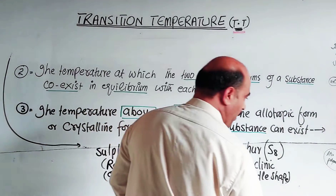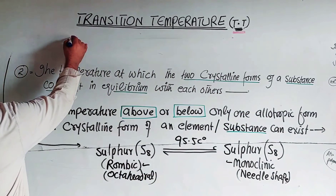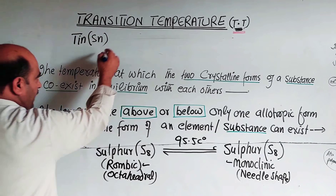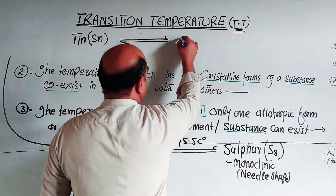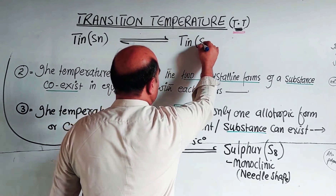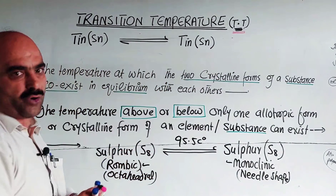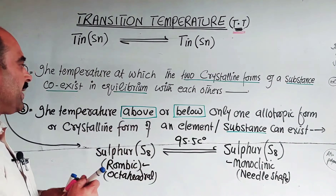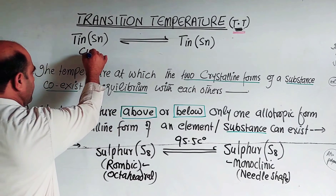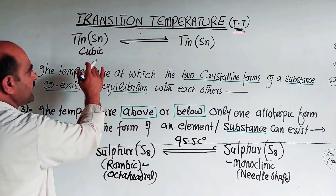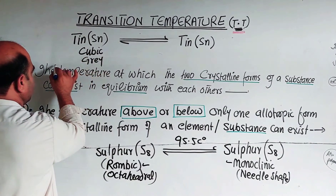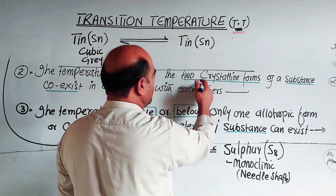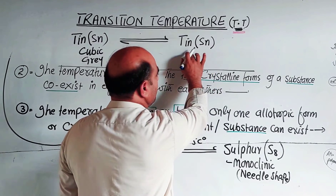Another example for definition number one is tin. Tin — symbol Sn — is an element. Tin has two allotropic forms. One form is gray in color — this is one allotropic form.